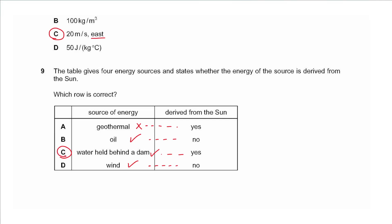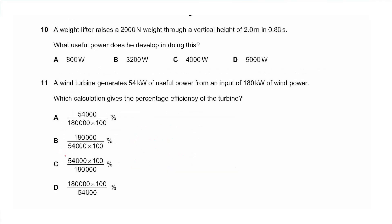Question 10 says a weight lifter raises a 2000 newton weight through a vertical height of 2 meters in 0.8 seconds. What useful power does he develop? Power equals work done divided by time, or force times distance divided by time. So 2000 times 2 divided by 0.8 seconds gives an answer of 5000 watts, so we choose D.